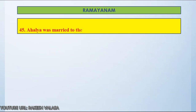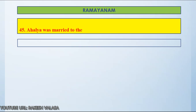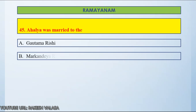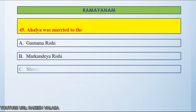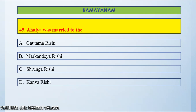Question number 45: Ahalya was married to — Option A, Gautam Rishi. Option B, Markander Rishi. Option C, Sungar Rishi. Option D, Kanwar Rishi. Let us count and start. If you know the answer, please post in the comment section.